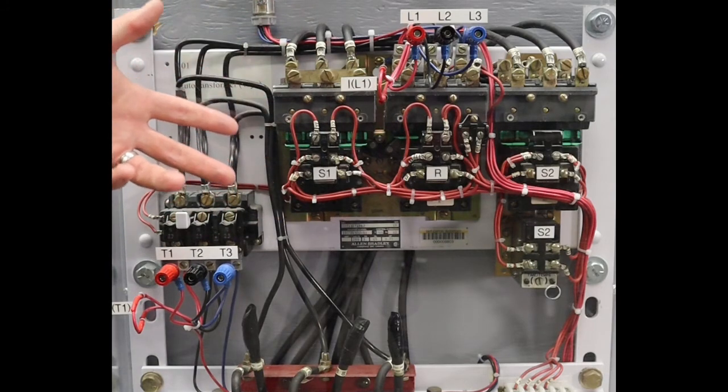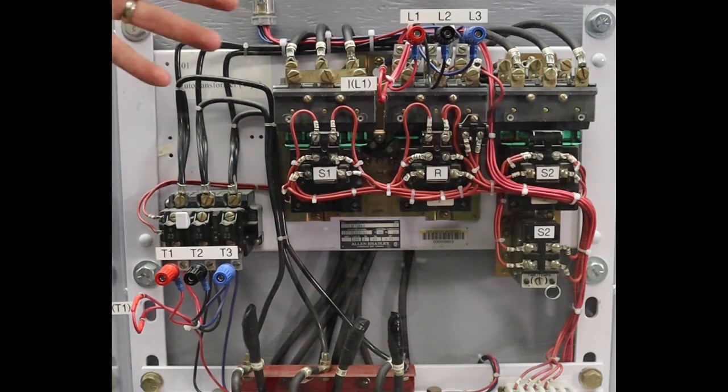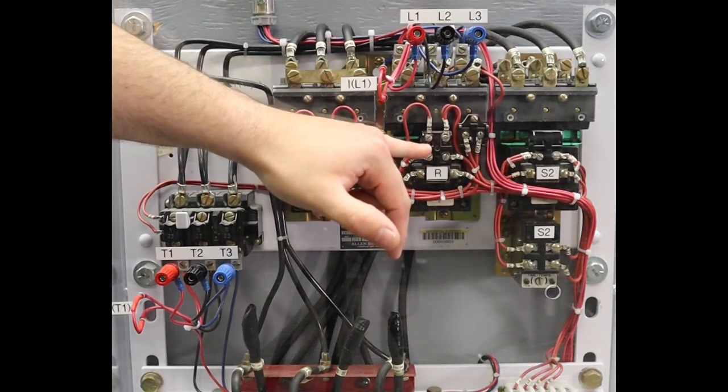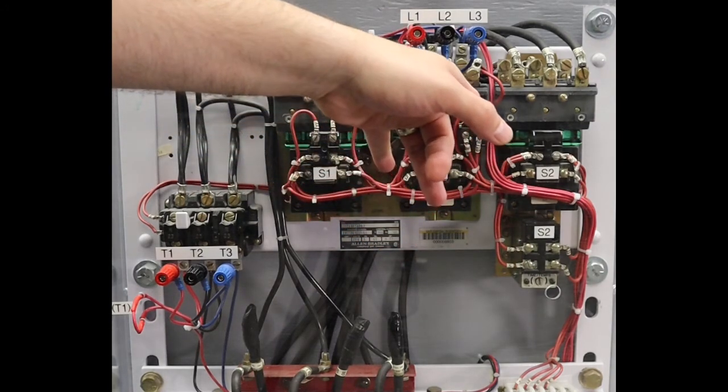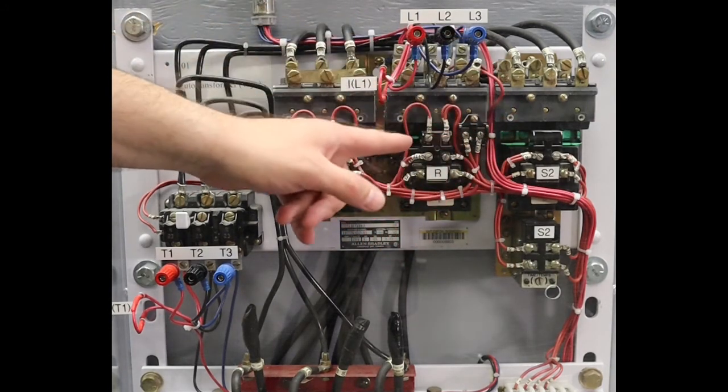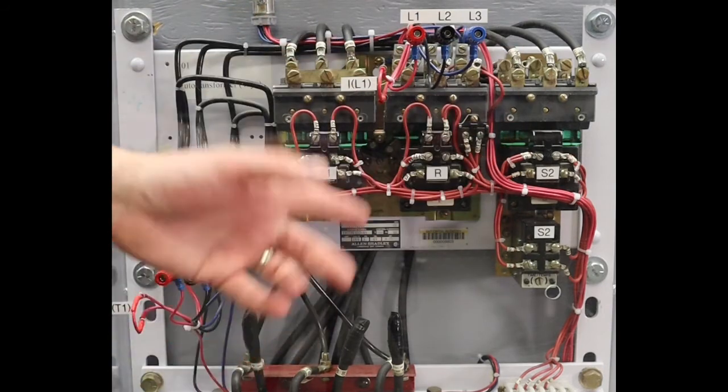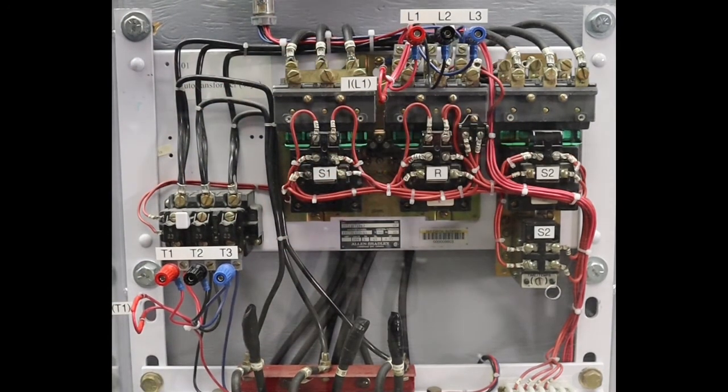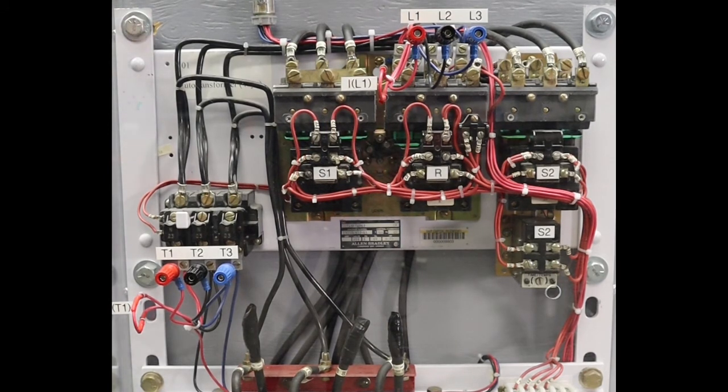So we saw that transition there really quick, and now it's hard to see, but yeah, S1 drops out, R, and S2 will stay in, R will close, then S2 will open. So let's take a look at it again here, but in slow motion, and you can see those contactors actually change.